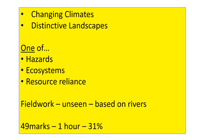You need to remember that there will be three sections in the paper. Section A will be the compulsory topics, so you have to answer all of the questions on changing climates and all of the questions on distinctive landscapes. When it comes to section B, remember that you have to choose one of the three choices they give you — either hazards, ecosystems, or resource reliance. Do not attempt to answer all three.